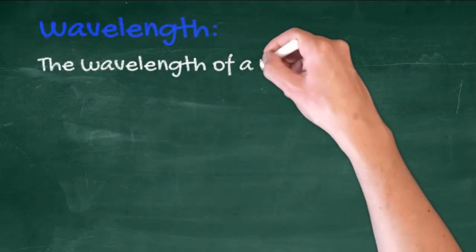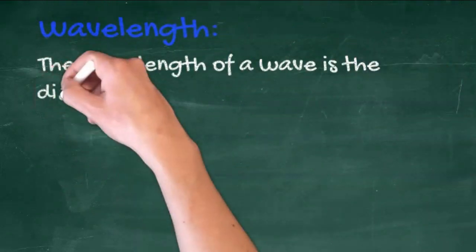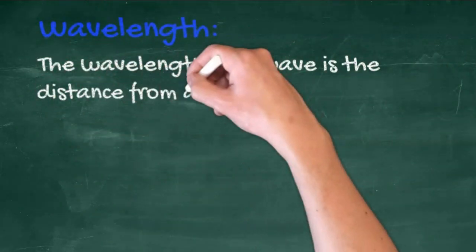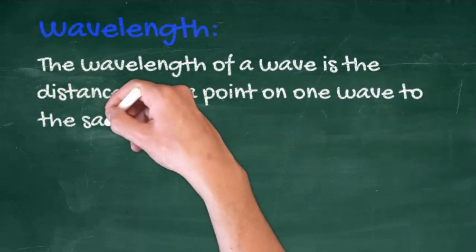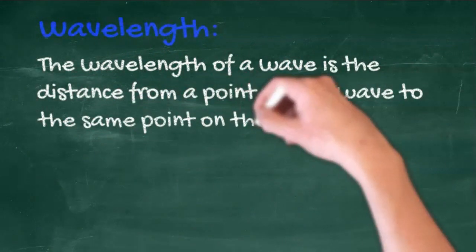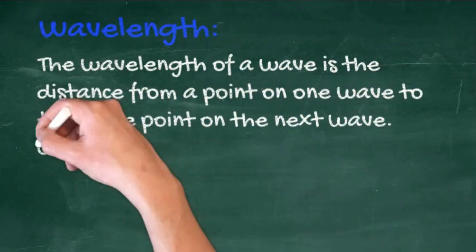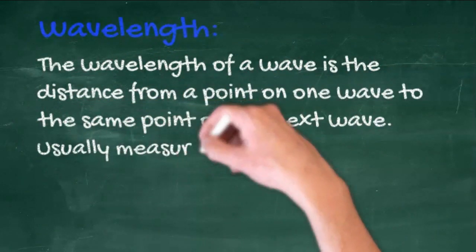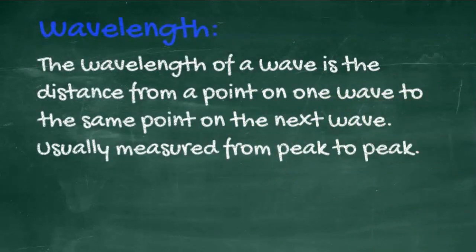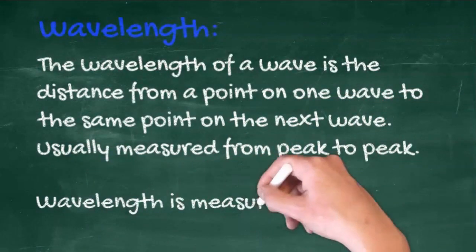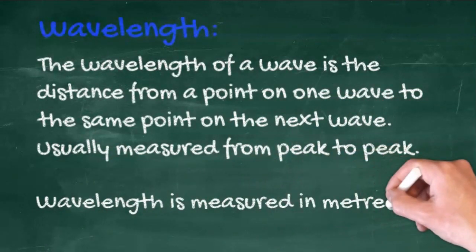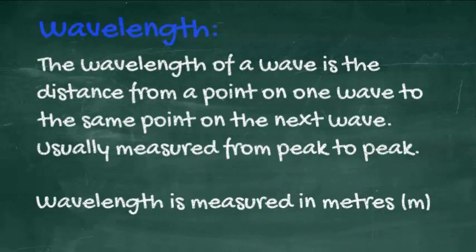The wavelength of a wave is the distance from one point on one wave to the same point on the next wave. This is usually measured from peak to peak, but it can be from anywhere. Wavelength is a distance and it's measured in metres.